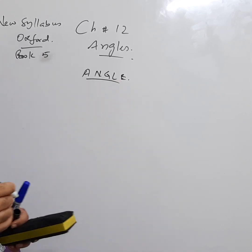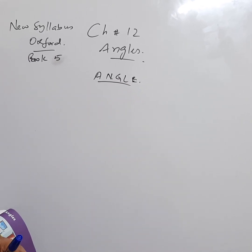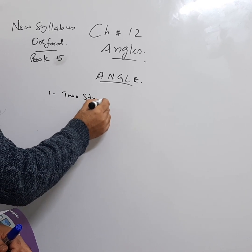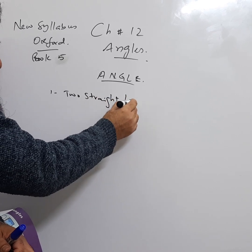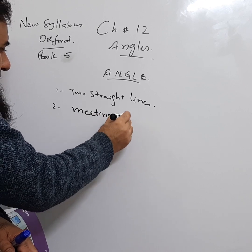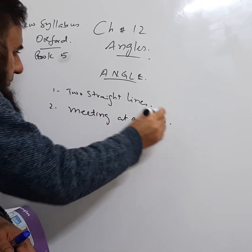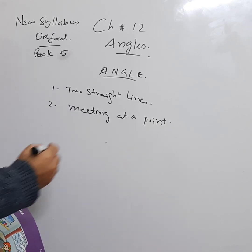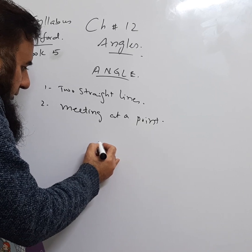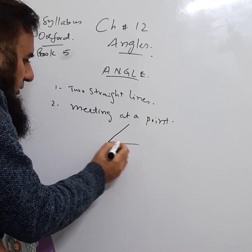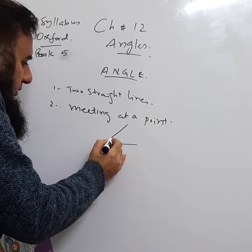First, you need to know what is an angle. An angle is formed when two straight lines meet at a point. So if there is one straight line and another straight line, and these two lines are meeting at a point, this is called an angle.